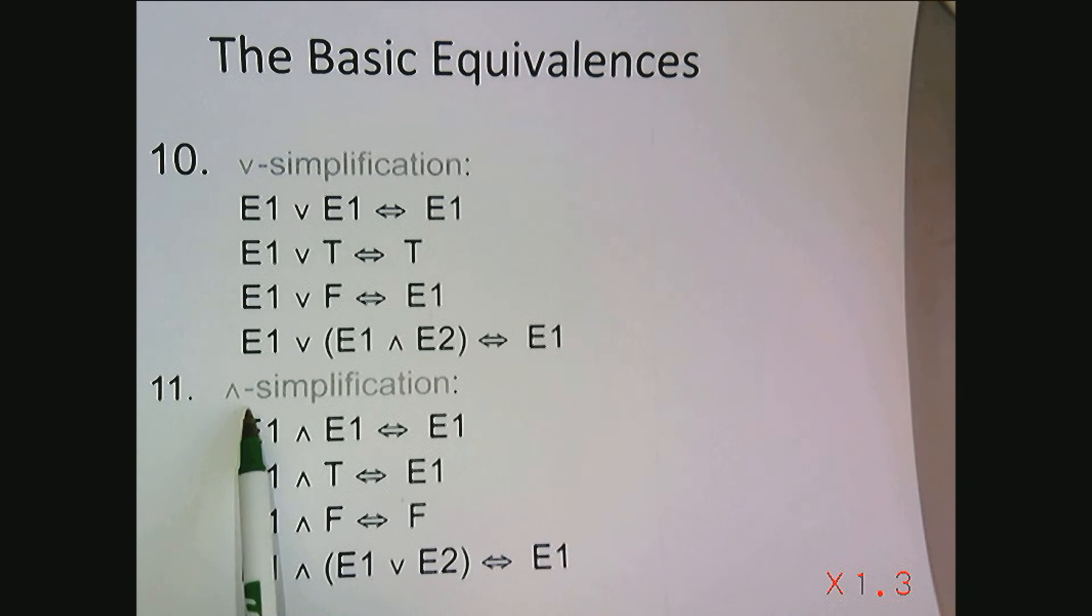And simplification tells us that E1 and E1 is equivalent to E1. E1 and true is equivalent to E1, E1 and false of course is equivalent to false. E1 and E1 or E2 is also equivalent to E1, simplifies a lot.